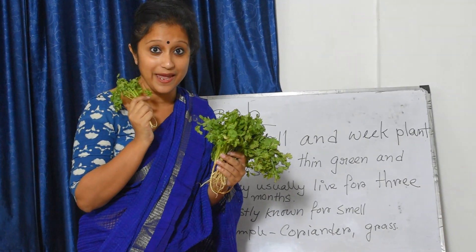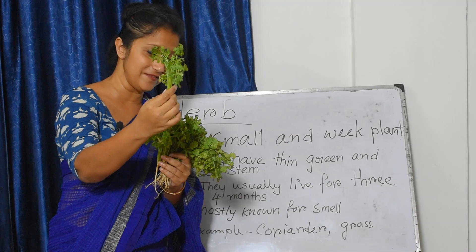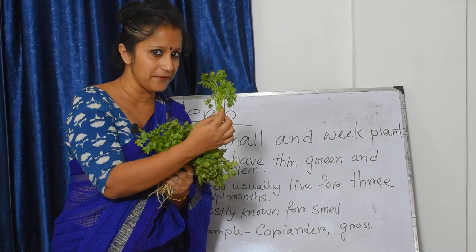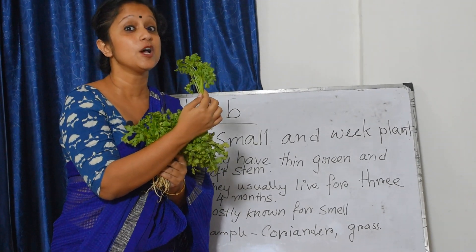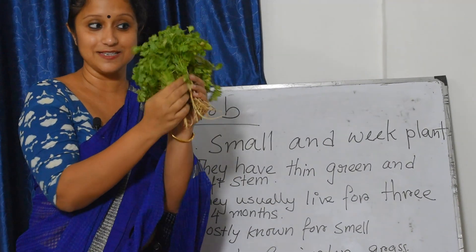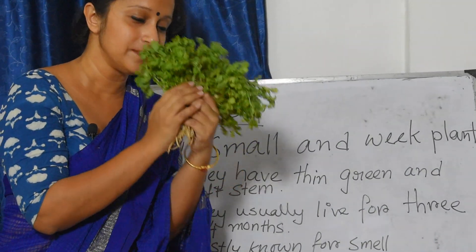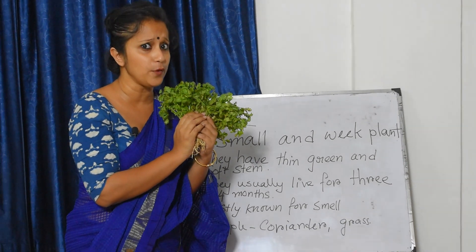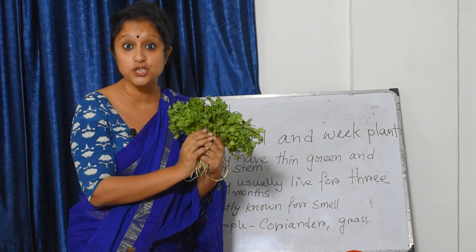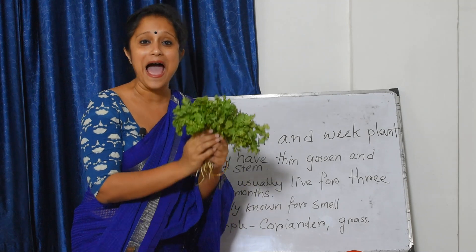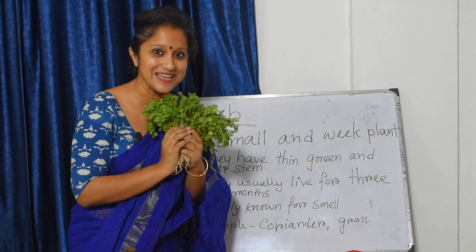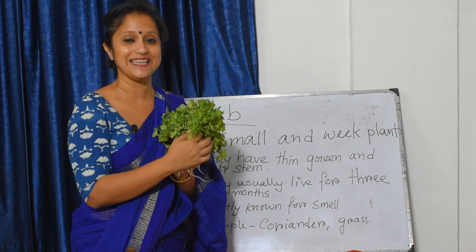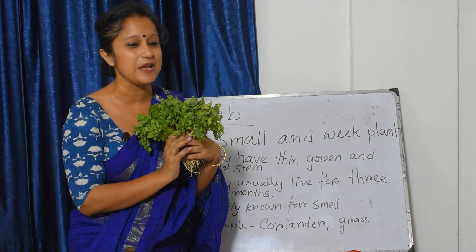What a good smell. Children, just see these leaves. What is the name of these leaves? Your mother also uses it to cook. This is coriander leaves, and these all are coriander leaves. The smell is really so good. If you have coriander leaves at your home, please go and just smell it. This is also a type of plant.